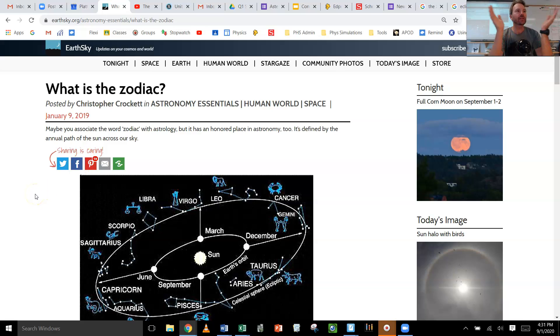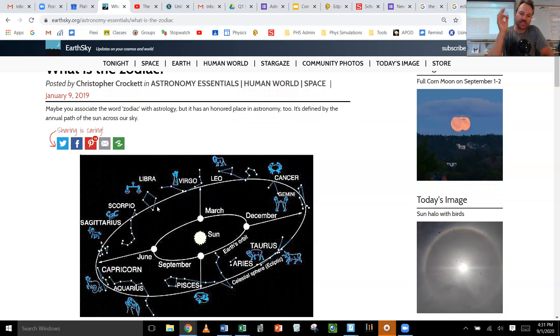First of all, maybe you've heard of the Zodiac. I, for instance, know that I am a Capricorn. I was born on January 18th, which makes me a Capricorn. Why does it make me a Capricorn? Maybe you know yours. There are 13 different Zodiac signs.